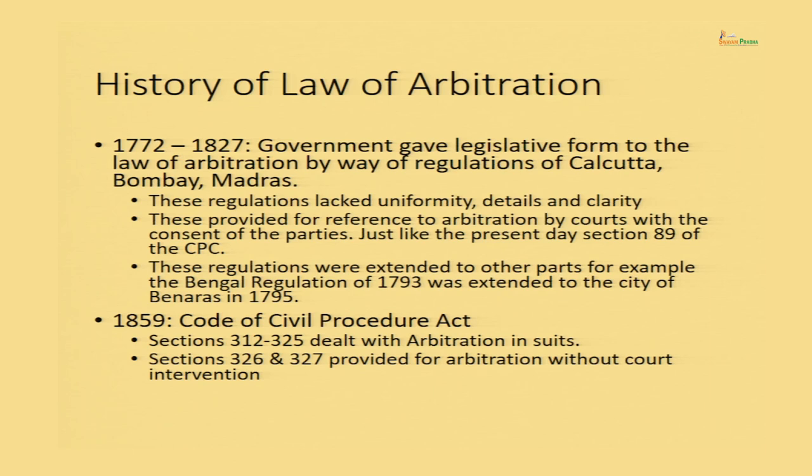Section 89 is an opt-out provision where you get a chance to come out of litigation at a stage where the judge thinks there exists an element of settlement. This kind of mechanism was evolved by the regulations of Calcutta, Bombay, and Madras. These regulations were extended beyond the presidency towns — for example, the 1793 Bengal regulation was extended to Banaras in 1795. This was the first stage of evolution of the law of arbitration by way of regulations.